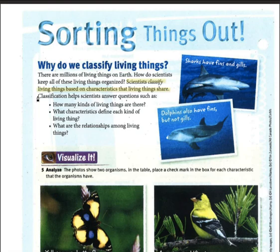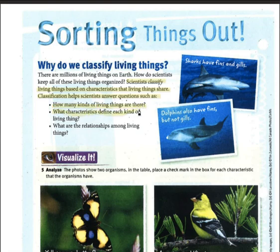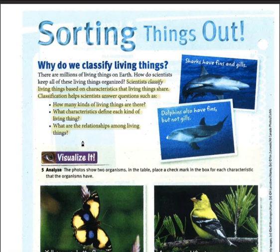Classification helps scientists answer questions such as: how many kinds of living things there are, what characteristics define each kind of living thing, and what are the relationships among living things — just how do they all relate? Finding out how they relate helps us know more about them and about other things related to them.